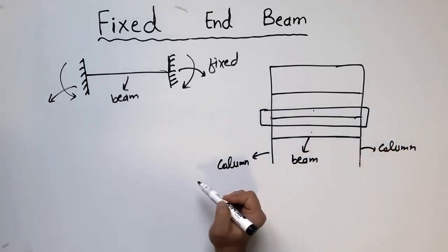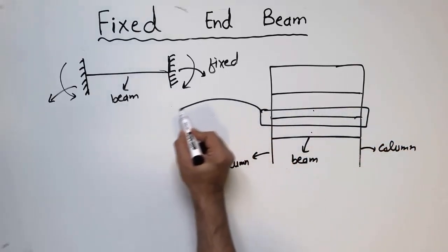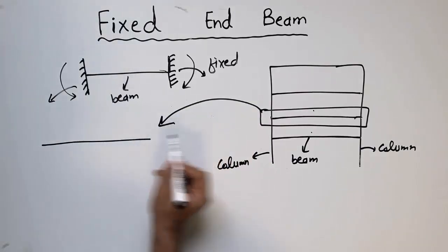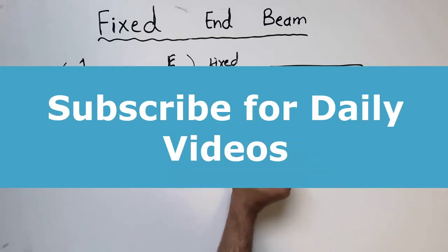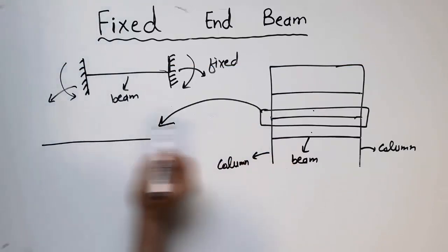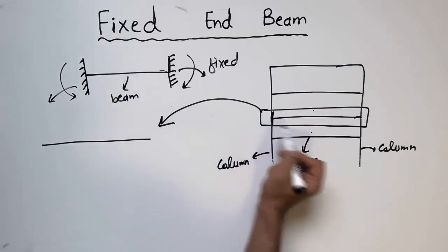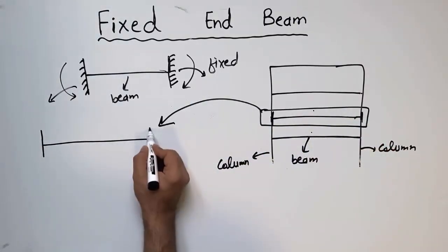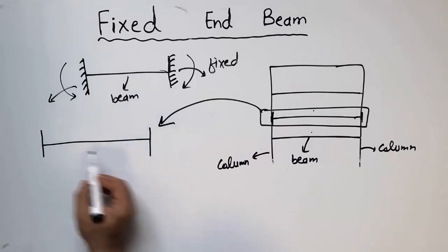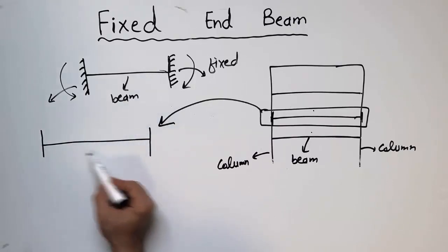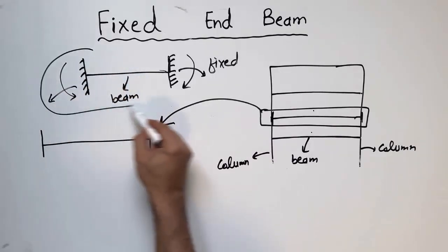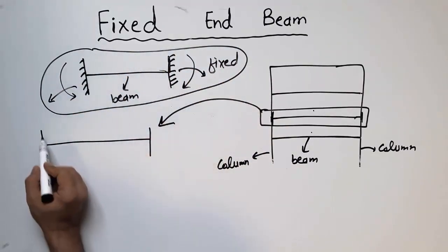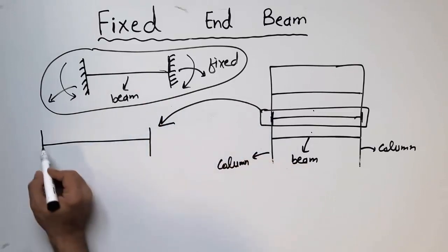Now I'll explain in detail how this beam is a fixed ended beam. Let's take this beam from this portion of the building, where the beam is supported by one column at one end and another column at the other end. This is actually the diagram of this beam — a fixed ended beam supported by two fixed supports.